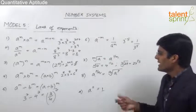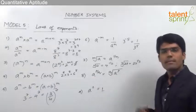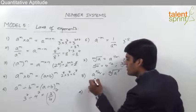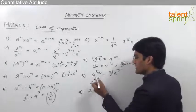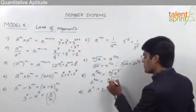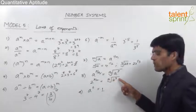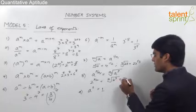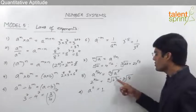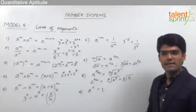Moving on, a power p by q will be equal to the qth root of a power p. For example, 2 to the power of 3 by 2 can be taken as the second root of 2 cube, which is the qth root of a to the power of p. This equals the square root of 8, because 2 cube is equal to 8, and can be further simplified as required.